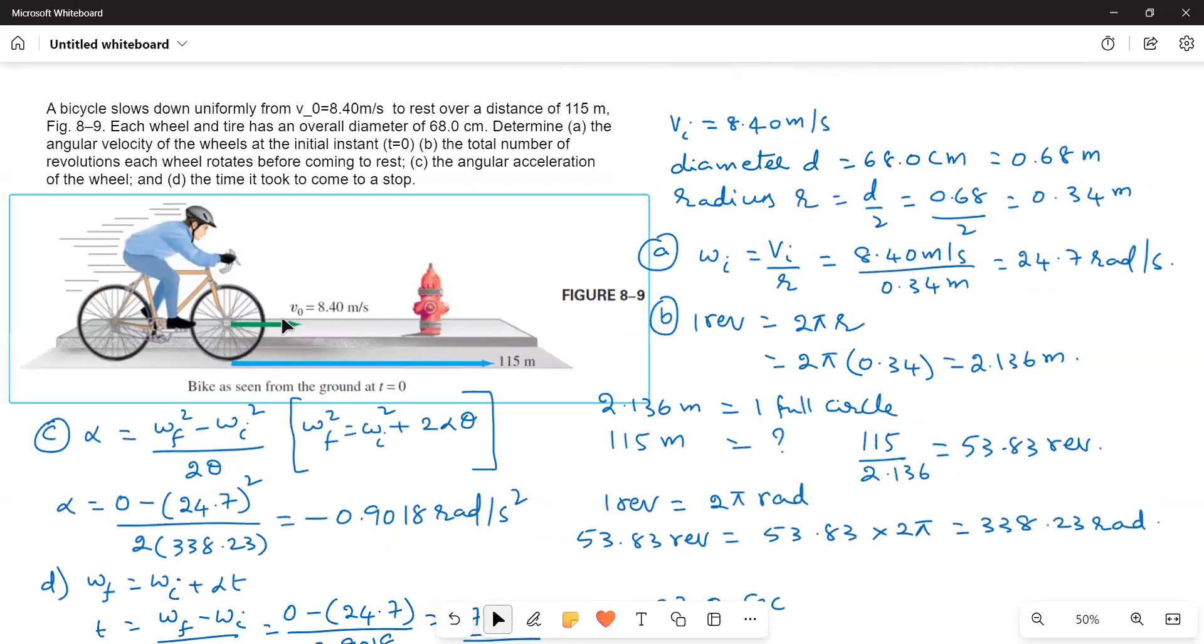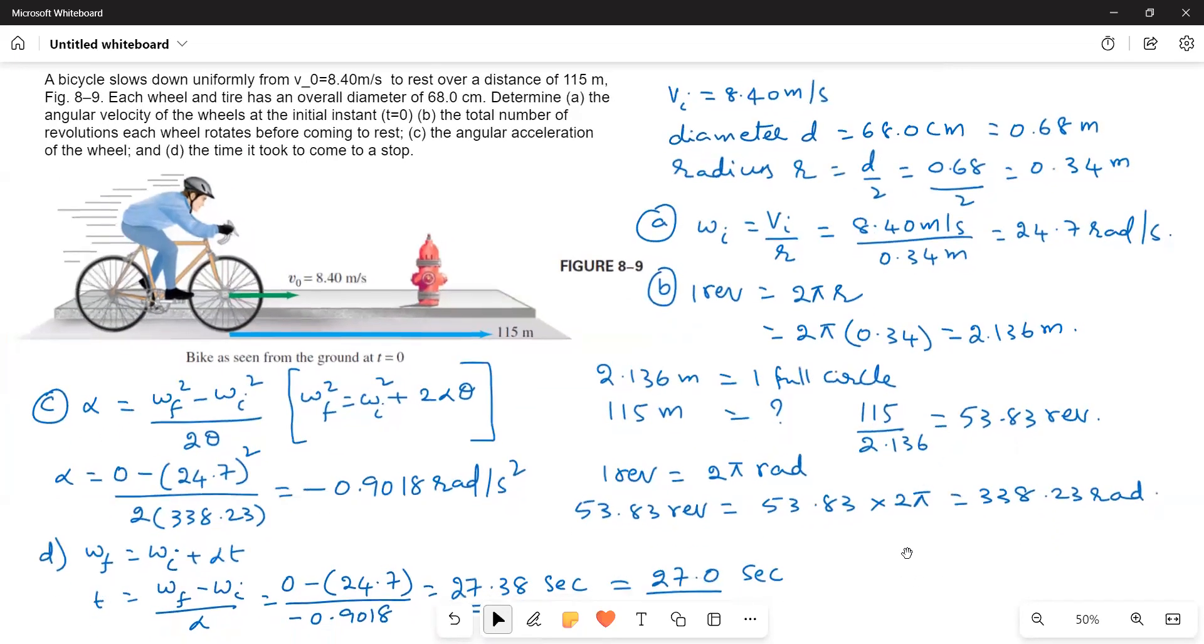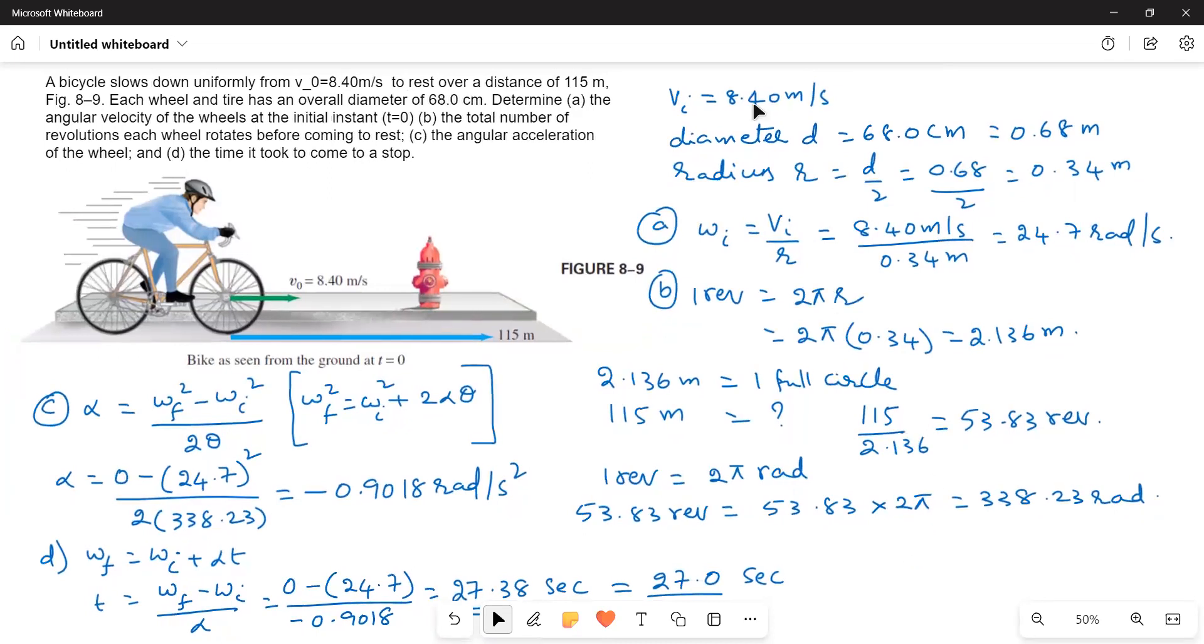You should know the conversion of rotations into revolutions, then from revolutions to radians. If you visualize one full circle—the circumference cut and laid in a linear fashion covers 2.136 m—it's very easy. After getting the revolutions, convert them into radians, and then the answer becomes straightforward.